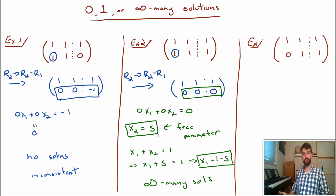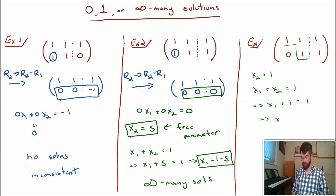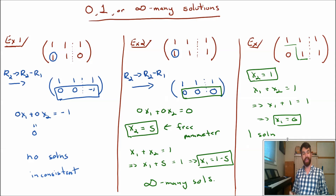In the final matrix, it's already in the ideal form I want: a leading one at the top, a zero beneath it, and another leading one below. I don't need to do any row operations. Reading off the second equation gives x2 equals 1. Then from the first equation, x1 plus x2 equals 1, so x1 plus 1 equals 1, giving x1 equals 0. That's one unique solution.